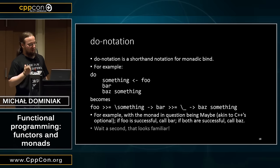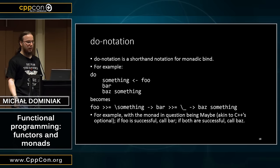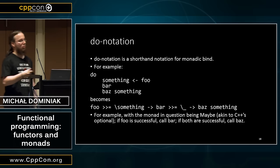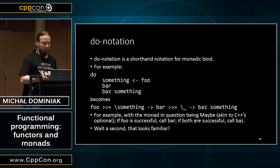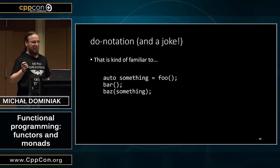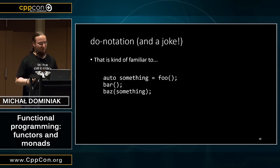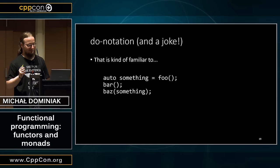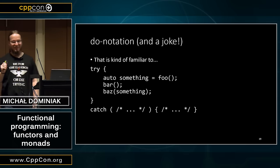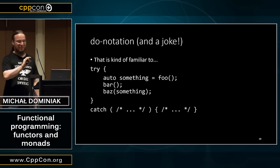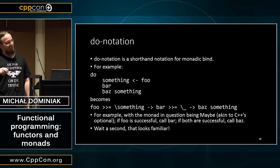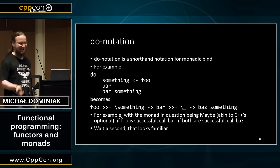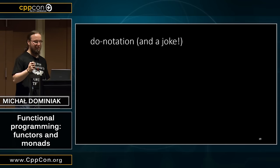This pretty much makes sense: if foo is successful then we call bar, if bar is successful we call baz. But that reminds you of something, right? It's kind of like this — this is pretty much the almost exact equivalent. So if that monad was an optional, or rather something that saves information about why the computation failed, this is the same.